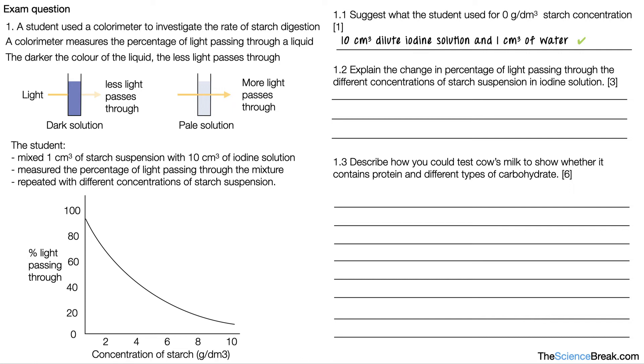For 1.2, it says explain the change in percentage of light passing through the different concentrations of starch suspension in the iodine solution. Well, the percentage of light passing through liquid decreased with increasing starch concentration. That's for one mark.